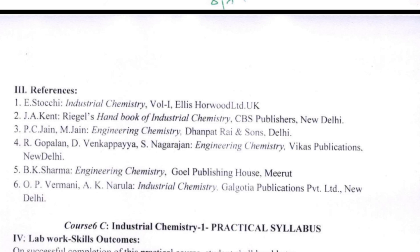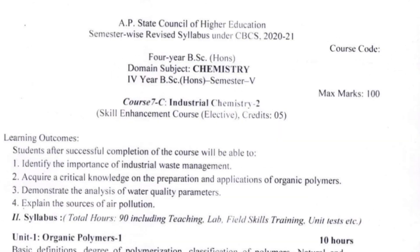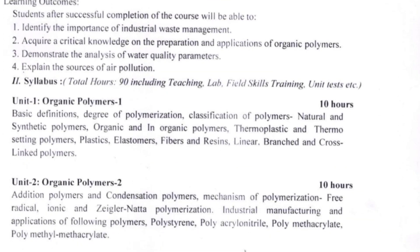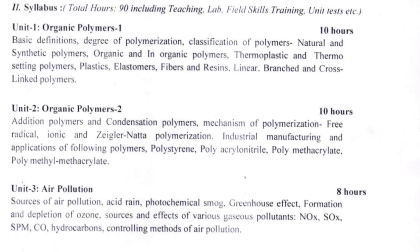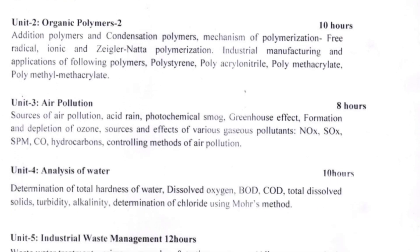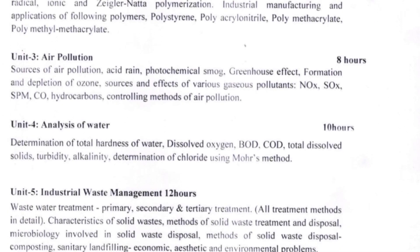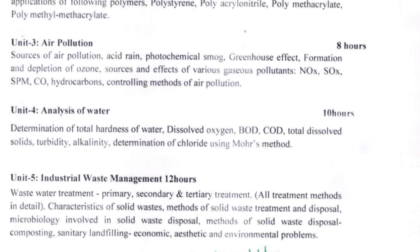The 7C paper title is Industrial Chemistry 2. Its syllabus covers Unit 1 Organic Polymers 1, Unit 2 Organic Polymers 2, Unit 3 Air Pollution, Unit 4 Analysis of Water, and Unit 5 Industrial Waste Management.